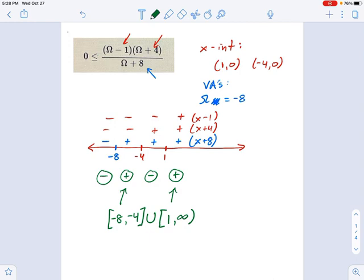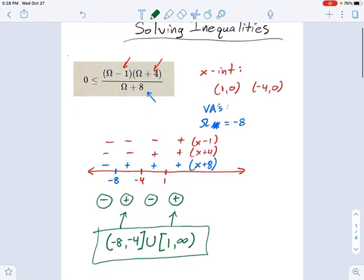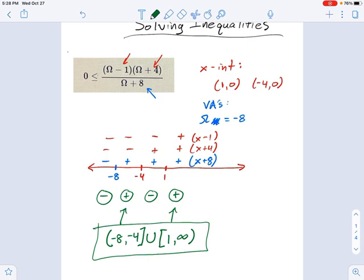If you plug negative 8 in here, you get some number on the top. I don't know what that is. But on the bottom, you would get 0. Negative 8 plus 8 equals 0. And something divided by 0 is not going to give you 0. It's going to give you infinity. So we cannot have negative 8 in our solution set. It's going to be a parentheses. So this is the actual answer. We need to pay attention to whether these factors are coming from vertical asymptotes or whether they're coming from x-intercepts. That determines the nature of the bracket or parentheses.